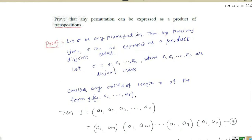Let sigma equal sigma_1 · sigma_2 · ... · sigma_m, where sigma_1, sigma_2, ..., sigma_m are disjoint cycles.